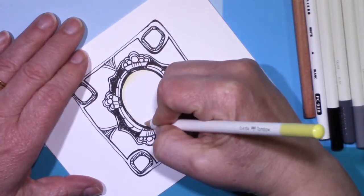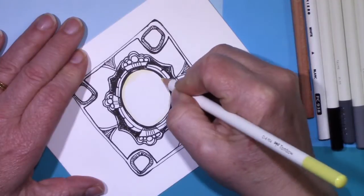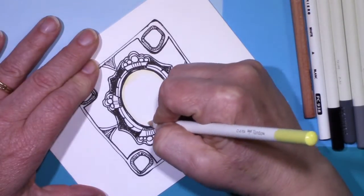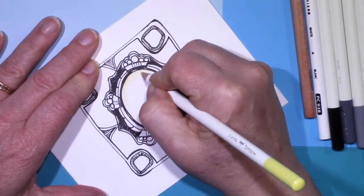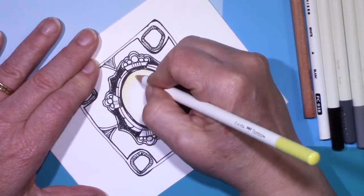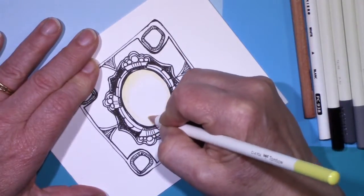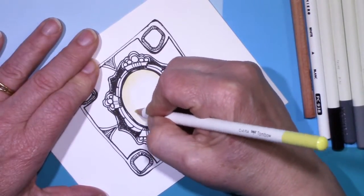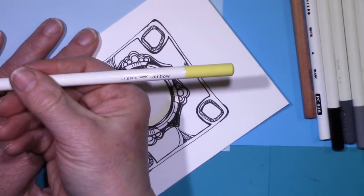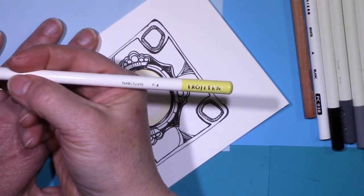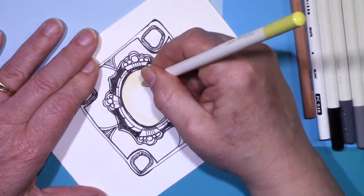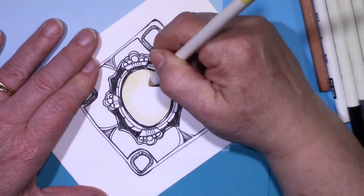Now I'm doing this on Neenah cover stock paper that's 110 pound and Neenah is N-E-E-N-A-H and you can find them online. I buy this on Amazon in 250 sheet packs but there are places on the internet that you can get this for just 10 sheets, 15 sheets. Most of the places would be ones that would do cards or rubber stamping because this paper makes awesome cards.